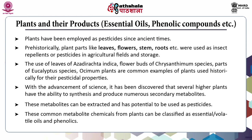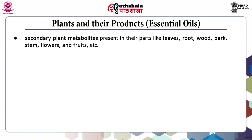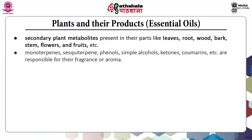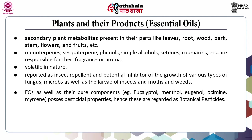The common metabolite chemicals from plants can be classified as essential oils and phenolics. Secondary plant metabolites present in plant parts like leaves, root, wood, bark, stem, flowers and fruits — including monoterpenes, sesquiterpenes, phenols, simple alcohols, ketones, coumarins — are responsible for the fragrance or aroma of aromatic plants. Essential oils are volatile in nature and have been reported as insect repellents and potential inhibitors of the growth of various types of fungi, microbes, larvae of insects, moths and weeds. Essential oils and their pure components including eucalyptol, eugenol, osmium, myristicin, para-cymene and menthol possess pesticidal properties and are regarded as botanical pesticides. Advantages of essential oils as botanical pesticides include: they are eco-friendly; have low toxicity against non-target organisms including humans; are highly effective against a wide range of pests and diseases; have multiple mechanisms of action; the development of resistance is less likely due to the large number of active ingredients; and low health risk during application due to low toxicity of residues.